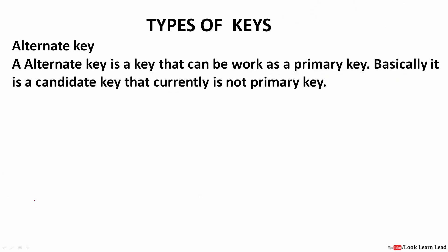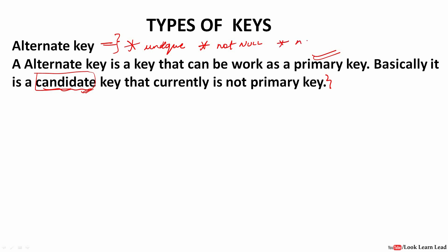The next key is the alternate key. An alternate key is a key that can work as a primary key — it is alternate to the primary key. Basically, it is a candidate key that is not chosen as the primary key. The properties of the alternate key are the same: it should uniquely identify a record, it cannot have null values, and it cannot have duplicate values. So all the properties of the alternate key are equal to that of the primary key.